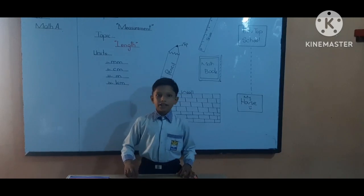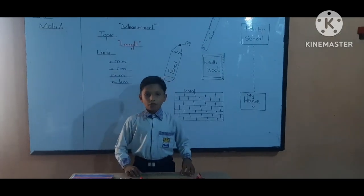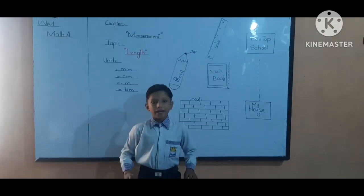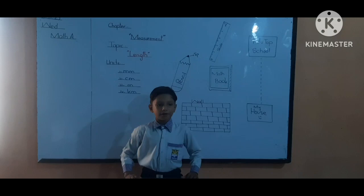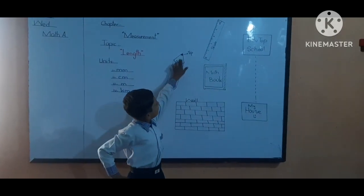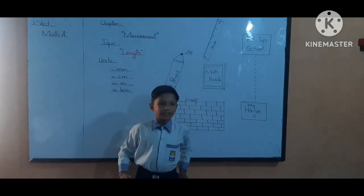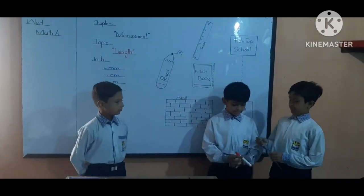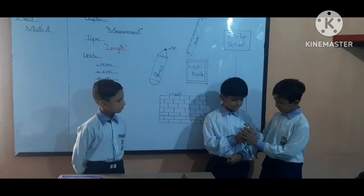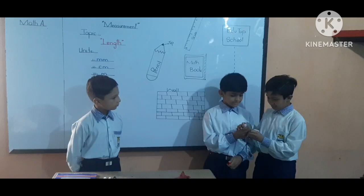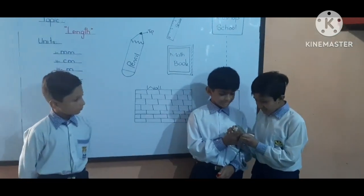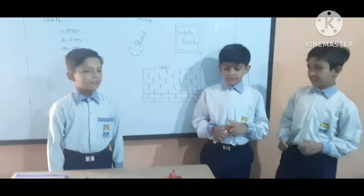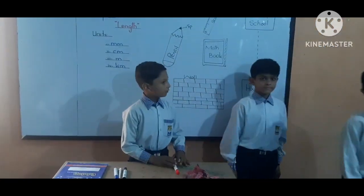Millimeter - we use this to check very small distances. For example, a pencil tip is a very small distance. Rohan, come here. I will show you an activity with this pencil tip. This tip is 5 millimeters. Very good, thanks.